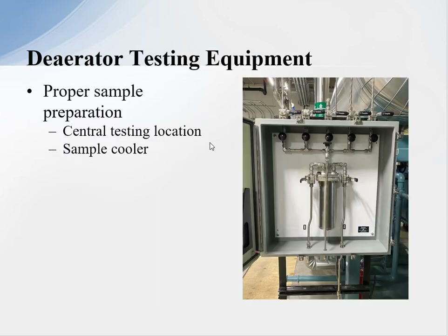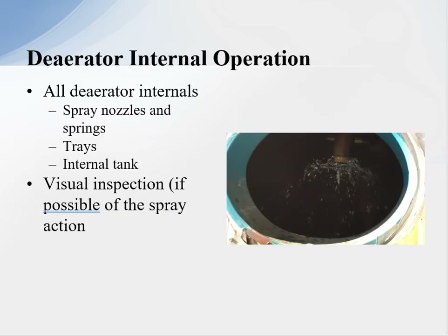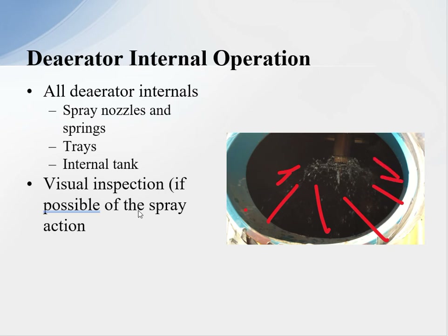You must have a proper sampling system. As shown here, all the different samples come down into a centrally located sample panel with a sample cooler, allowing plant personnel to take tests easily. All deaerator internals — spray nozzles and internal components — should be visually inspected, and if possible, have the spray action occur. This image shows the spray action: water spraying out and hitting the diffuser. This particular deaerator happened not to meet specification — we just didn't get the water to break down into the smallest droplets possible for proper deaeration.